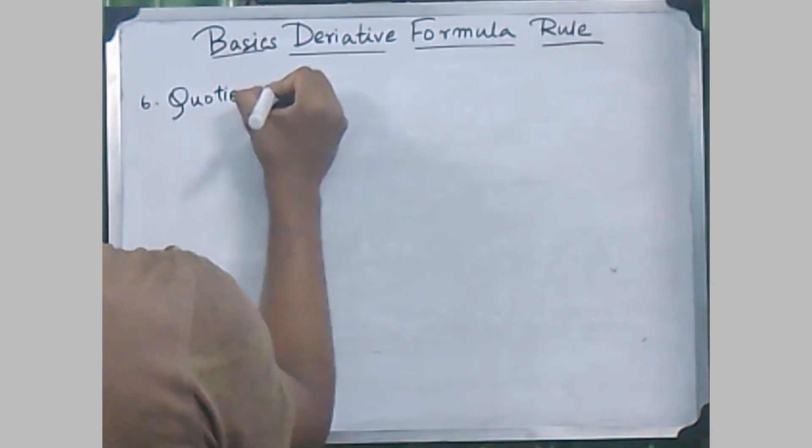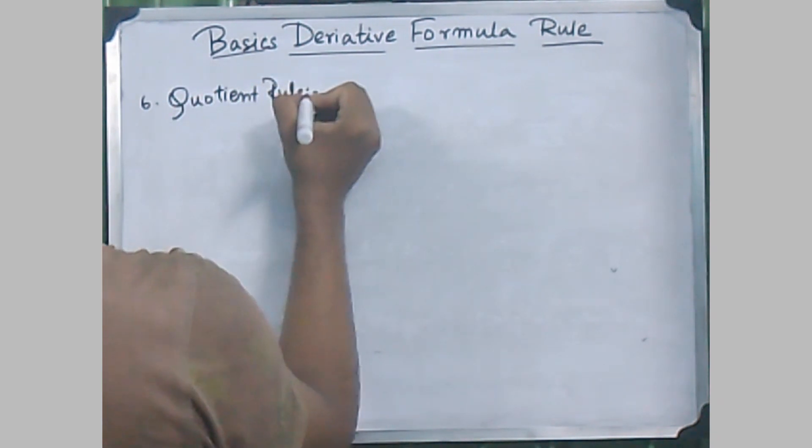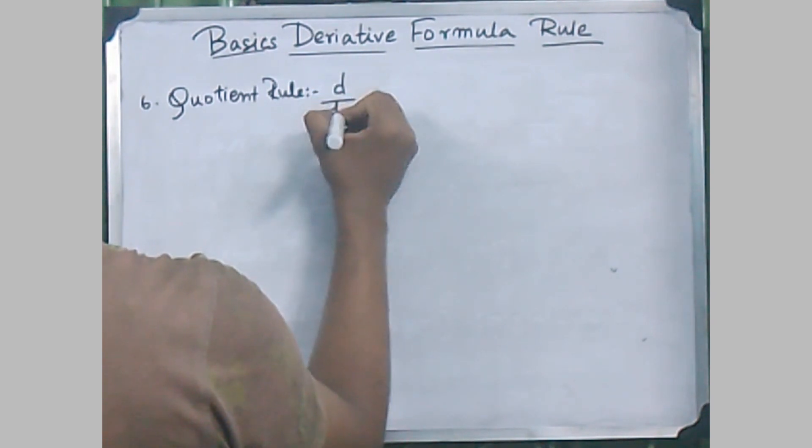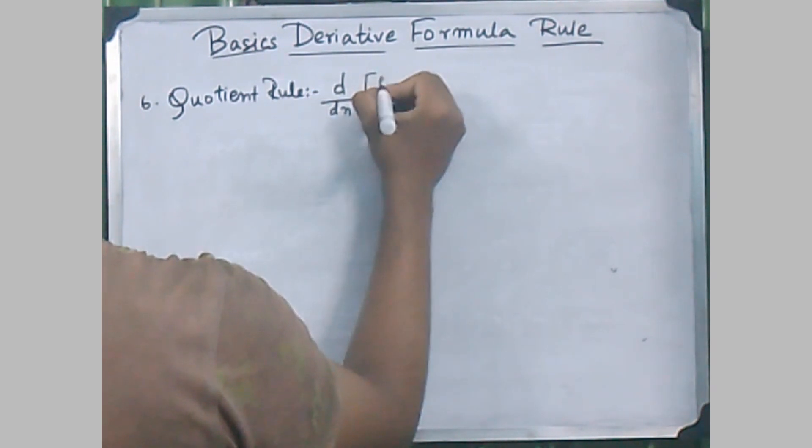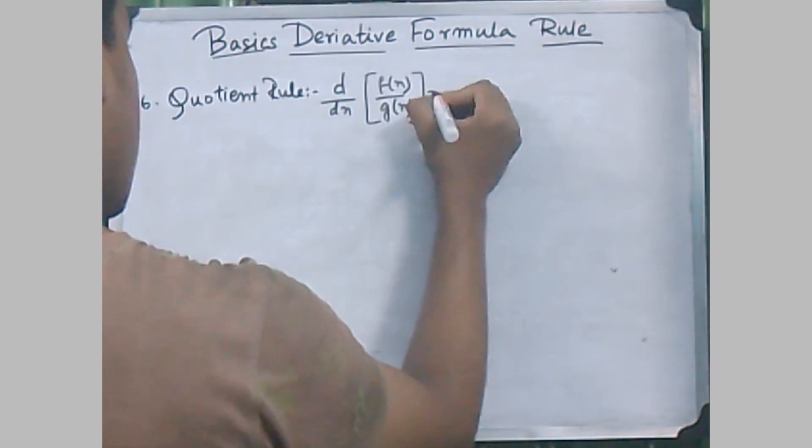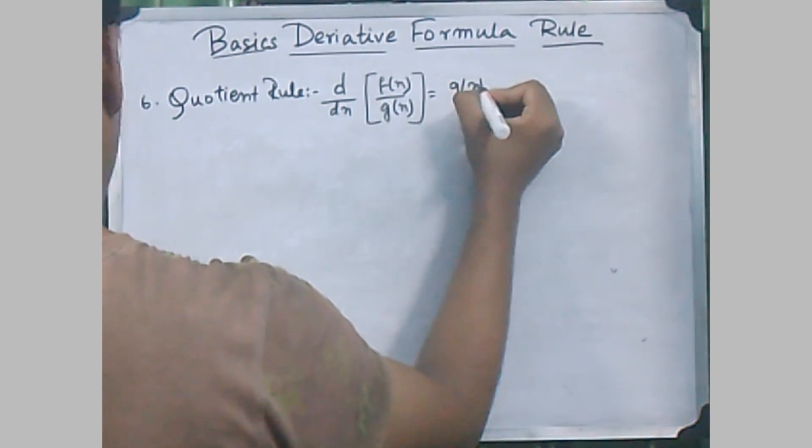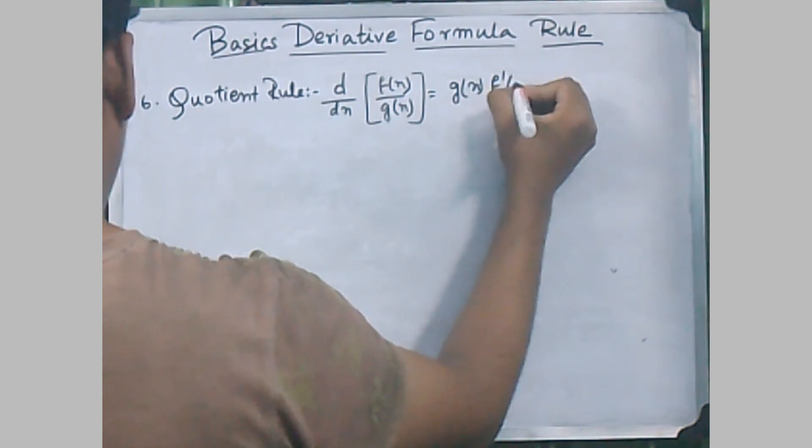The sixth rule stands for the quotient rule, where d/dx of [f(x)/g(x)] equals [g(x)·f'(x)